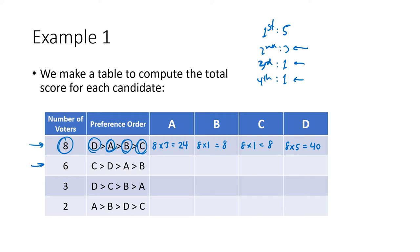In the next row we have six voters who like C the best. C is in first place for those six ballots, so C gets six times five, which is 30. D is in second place on these ballots, and second place is worth three, so that's six times three, which is 18.